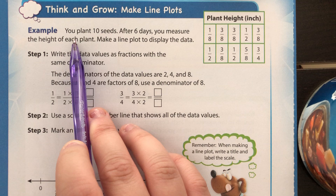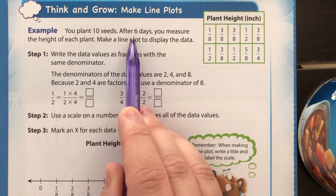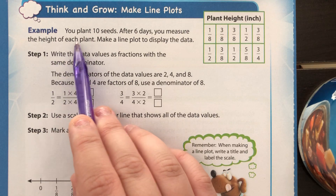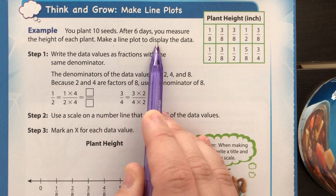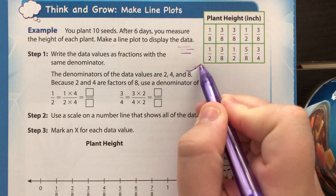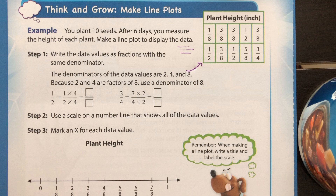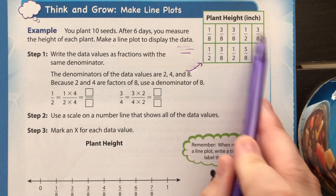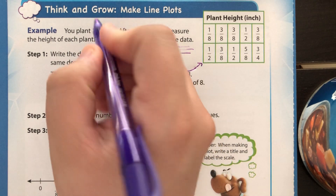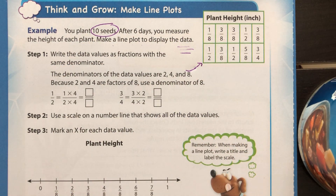For this particular example, it says you plant 10 seeds. After six days, you measure the height of each plant. Make a line plot to display the data. When they talk about data, they mean all the measurements that they found. They're right here and they measured it in inches. You don't have to measure those plants — they already gave you those. Now, it says that you planted 10 seeds, that's why there are 10 fractions, because they measured each of those plants once they grew.